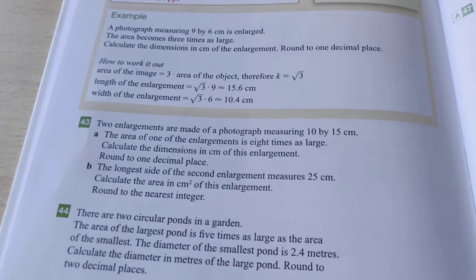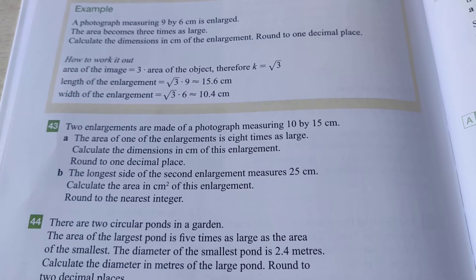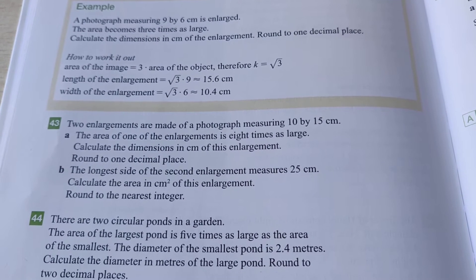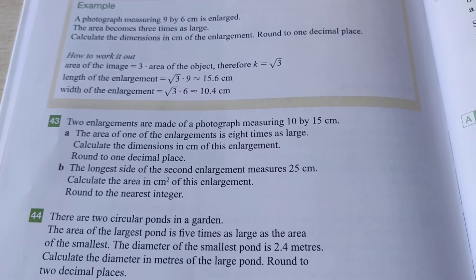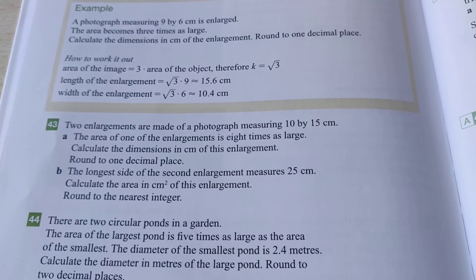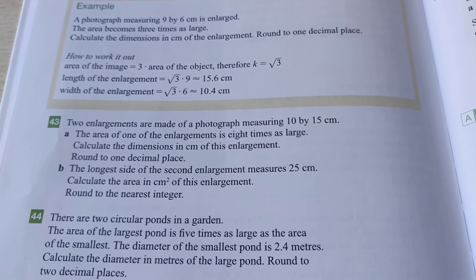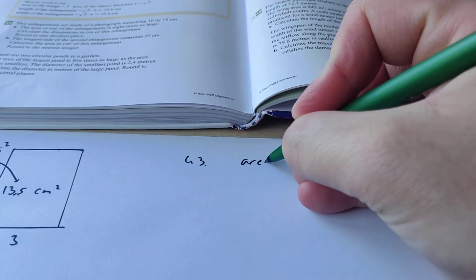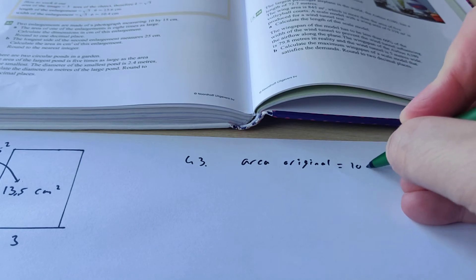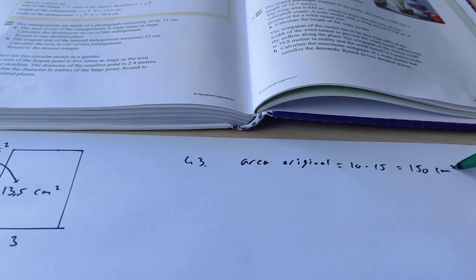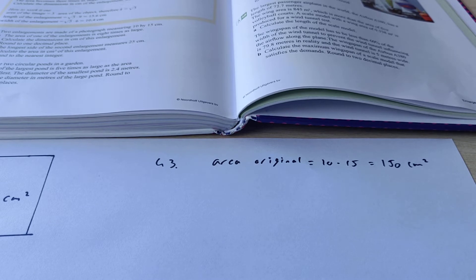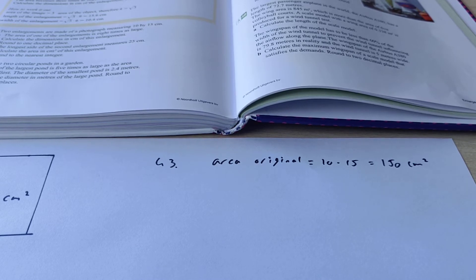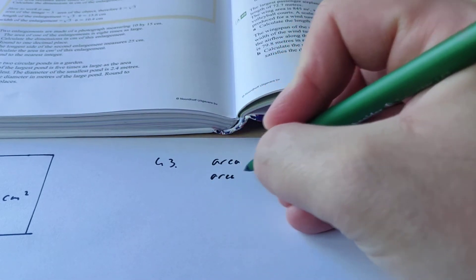Let's take a look at exercise 43. It says: two enlargements are made of a photograph measuring 10 by 15 centimeters. The area of one of the enlargements is 8 times as large. Calculate the dimensions in centimeters of this enlargement, rounded off to one decimal place. So we know the photograph is 10 by 15, so the area of the original is 10 times 15 = 150 squared centimeters. The area of the enlargement is 8 times as large, so we can calculate 150 times 8 = 1,200 squared centimeters.